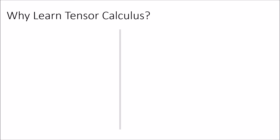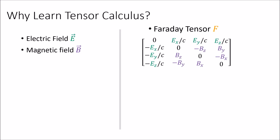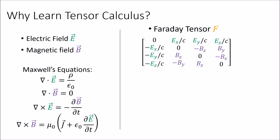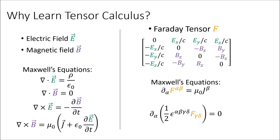Now that you know what tensor calculus is, why would you want to study it? A lot of concepts in intermediate and advanced physics can be described by tensor fields. For example, electric and magnetic fields are usually thought of as two separate vector fields, but we can combine them into a single tensor field given by the Faraday tensor. The four equations of electricity and magnetism — Maxwell's equations — can be combined and simplified into two tensor equations describing the behavior of the Faraday tensor everywhere in space. This is how electricity and magnetism are described in special relativity.